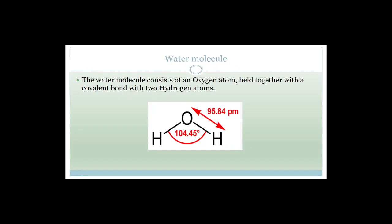The water molecule, as you guys know, consists of an oxygen with two hydrogens — basically Mickey Mouse ears. This is the Lewis structure of water. Oxygen has got two bonds, one each for the hydrogens, and it is held together with a covalent bond. You also need to know the length of these bonds, which is 95.84 picometers.